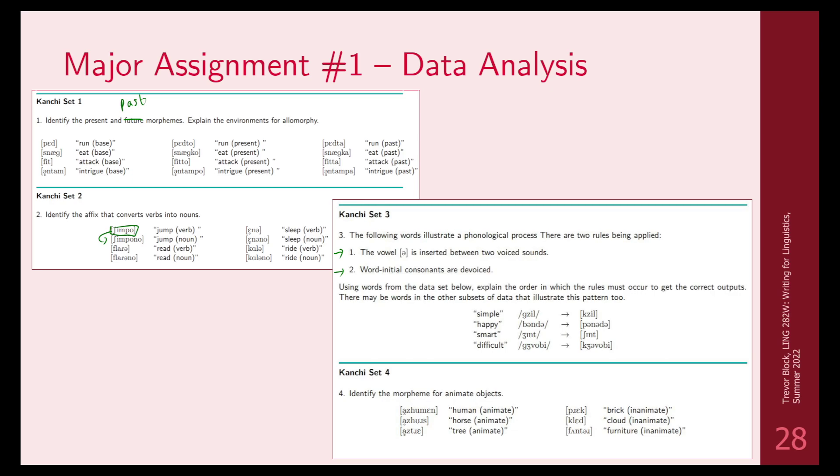In set three, you have two phonological processes. I've given you some words, and you're supposed to determine the rule order for how they're applied. We have vowel insertion between two voiced consonants, and then we have word initial devoicing. So g becomes k, b becomes p, and so on. You have to explain that order. And four, you have to determine what the morpheme is for animate objects. So there's inanimate objects as a base, and then there's animate objects that have some morpheme attached to them to make them animate, so living.